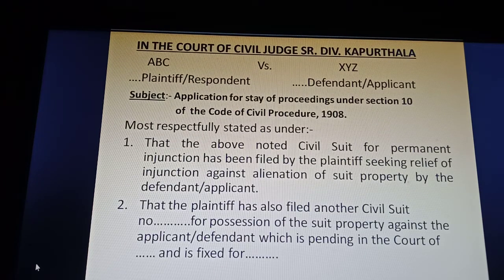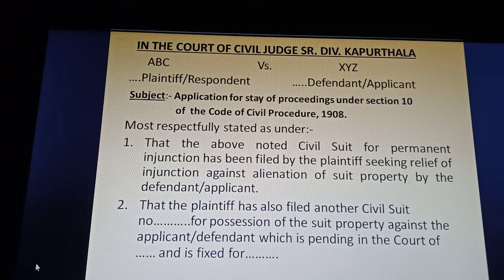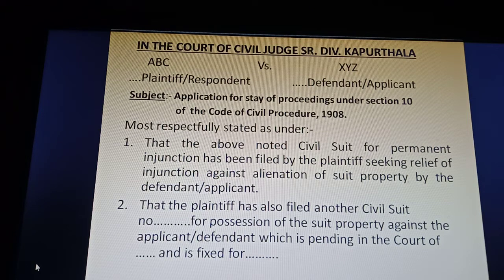Now, how to draft the application. First, the name of the court is to be given in which we are going to file the application — for example, 'In the Court of Civil Judge Senior Division, [city].' Then the title of the parties: ABC versus XYZ, where ABC is the plaintiff and respondent of the application, XYZ is the defendant and applicant, and the subject matter is 'Application for Stay of Proceedings under Section 10 of the Code of Civil Procedure, 1908.'